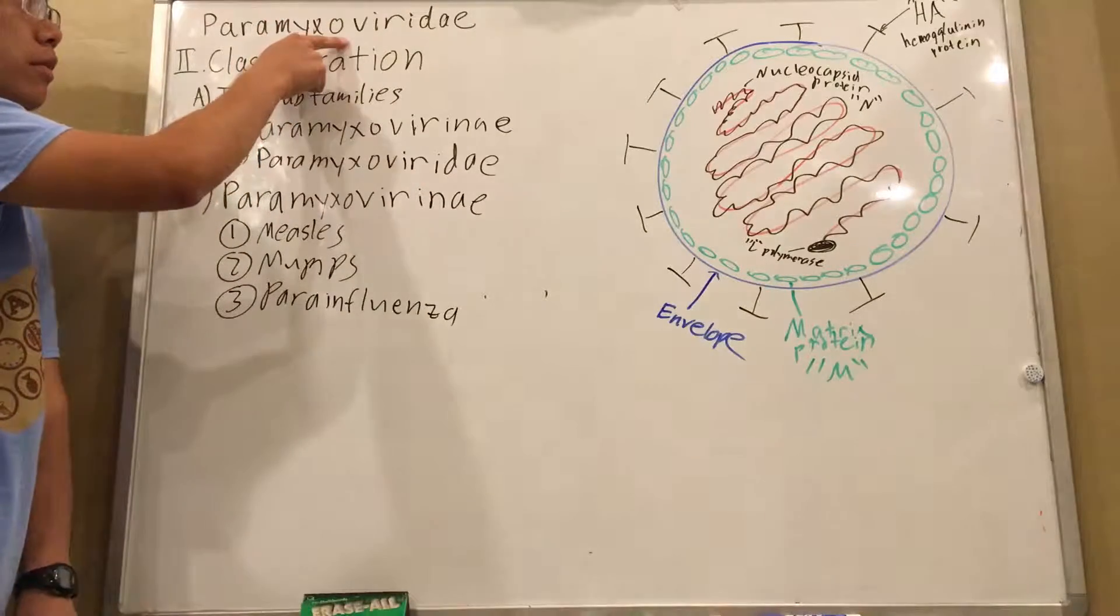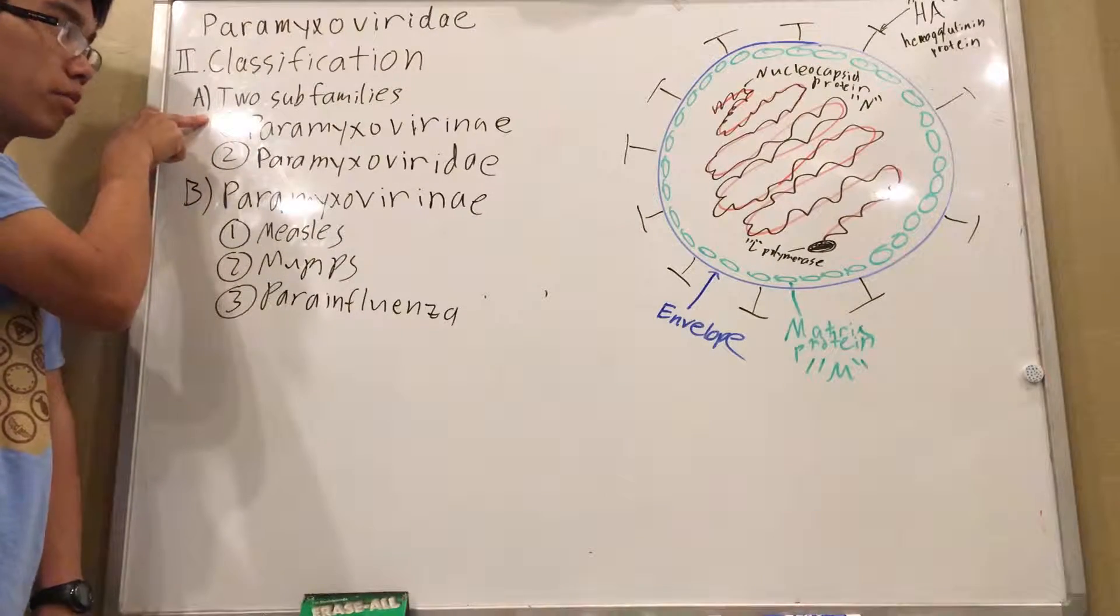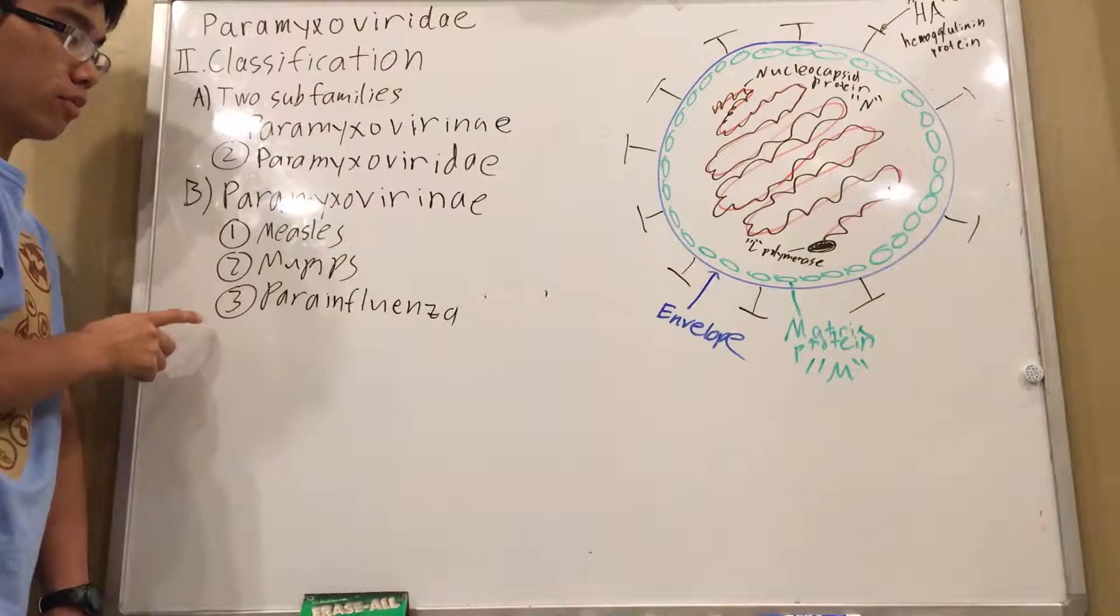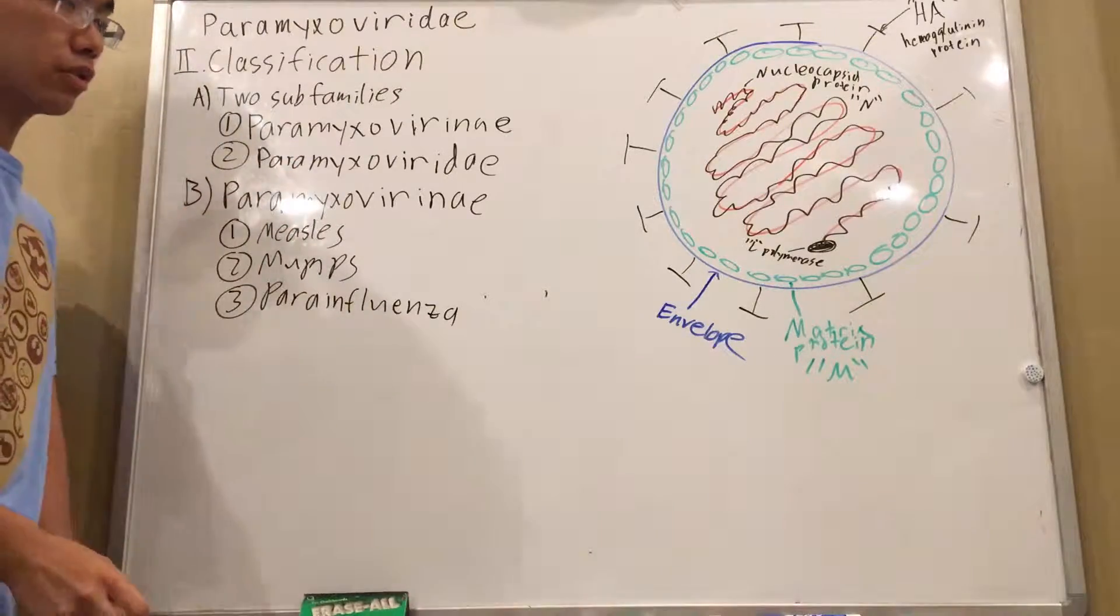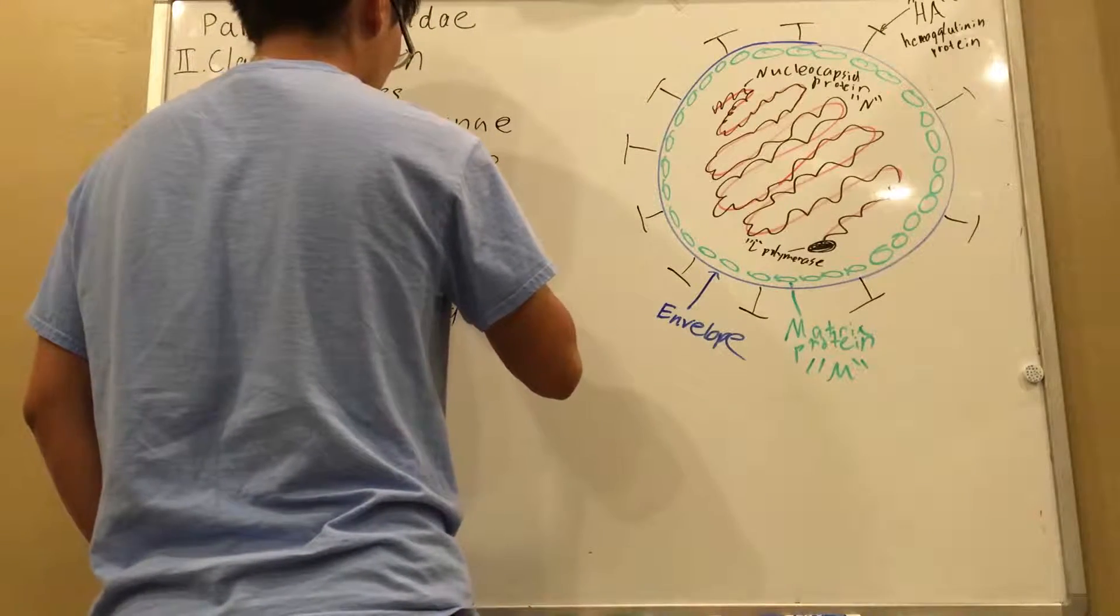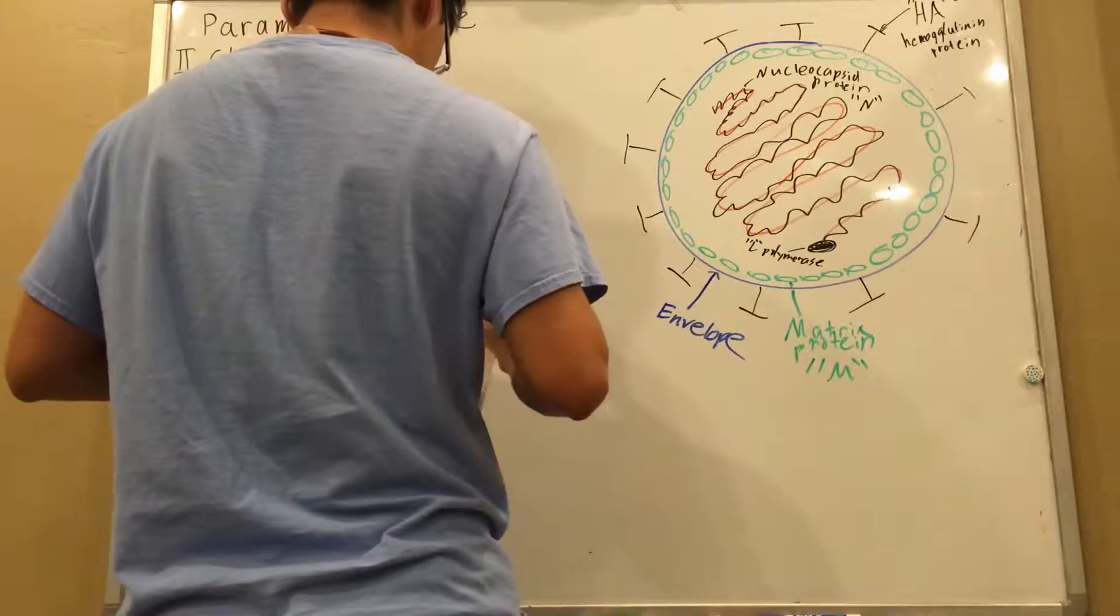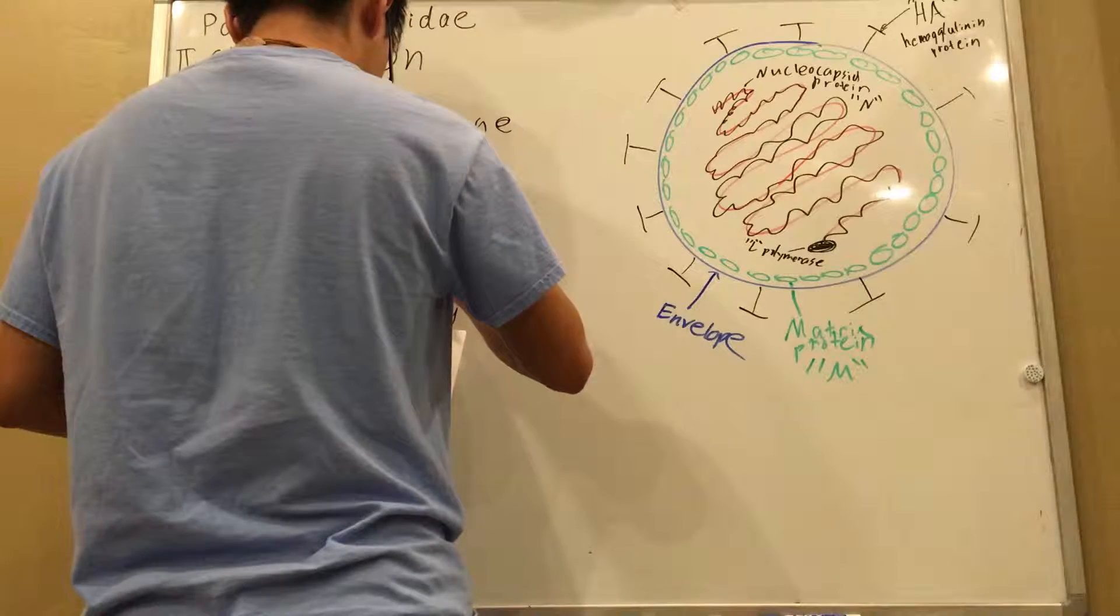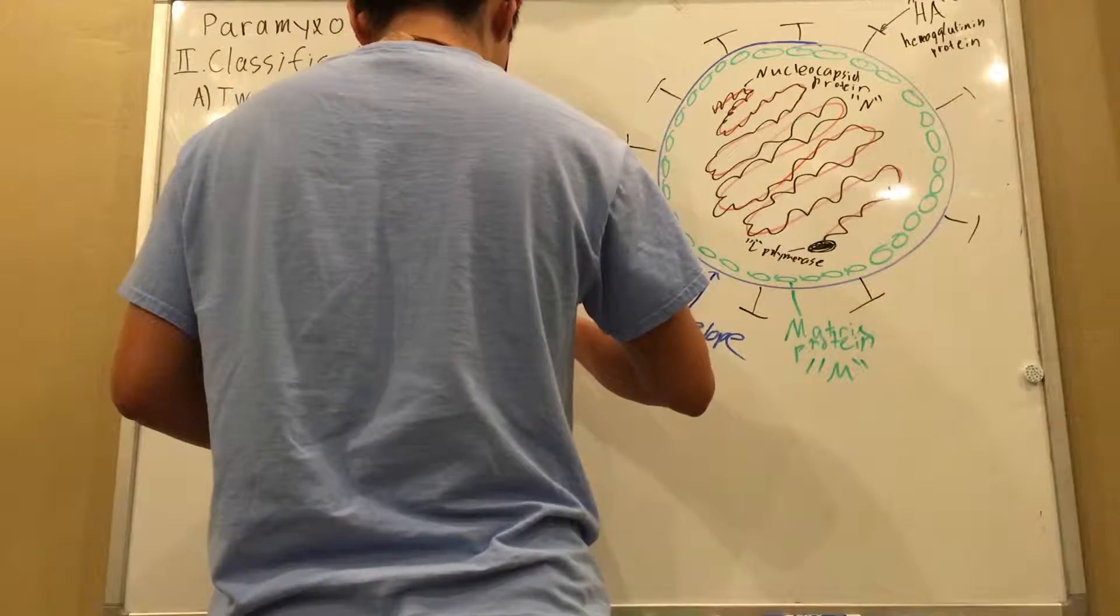So there's the family Paramyxoviridae, the subfamily Paramyxovirinae, and within the Paramyxovirinae you have three main diseases: measles, mumps, and parainfluenza. But these also belong in their subgroups. These belong to Morbillivirus, this is Rubulavirus, and this is Respirovirus.